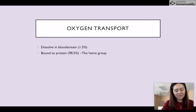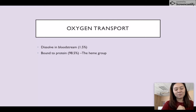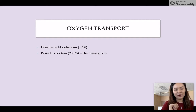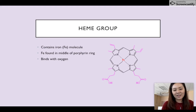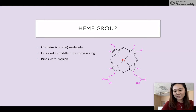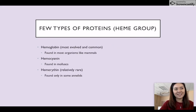For oxygen transport, there are two ways. First, oxygen will be transported by dissolving in the bloodstream, but this is only 1.5% of the oxygen. The other 98.5% will be bonded to a protein, which is the heme group. A heme group contains iron molecules, and these iron molecules are found in the middle of the porphyrin ring. This iron will bind with oxygen to form oxyhemoglobin in the human body.